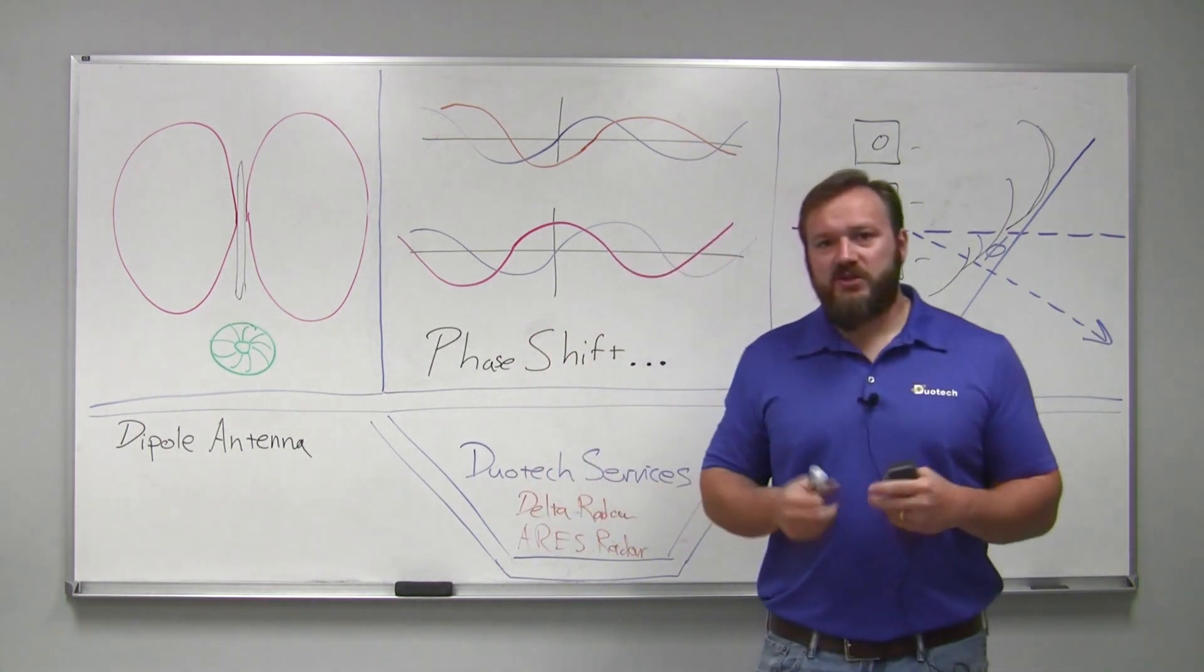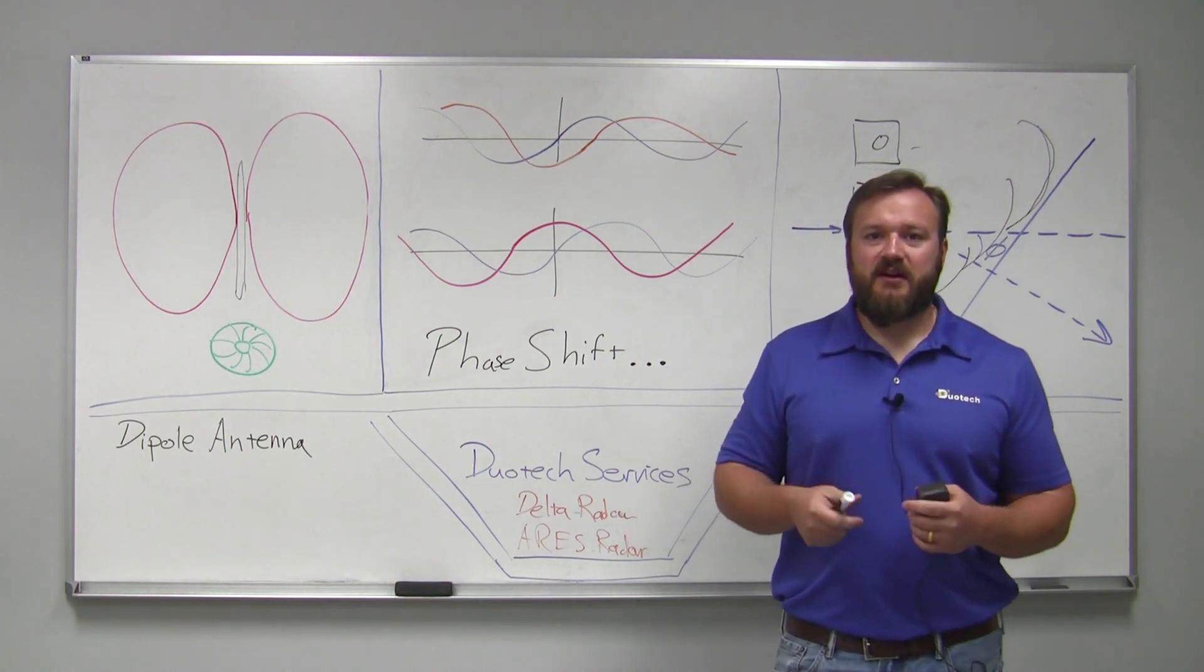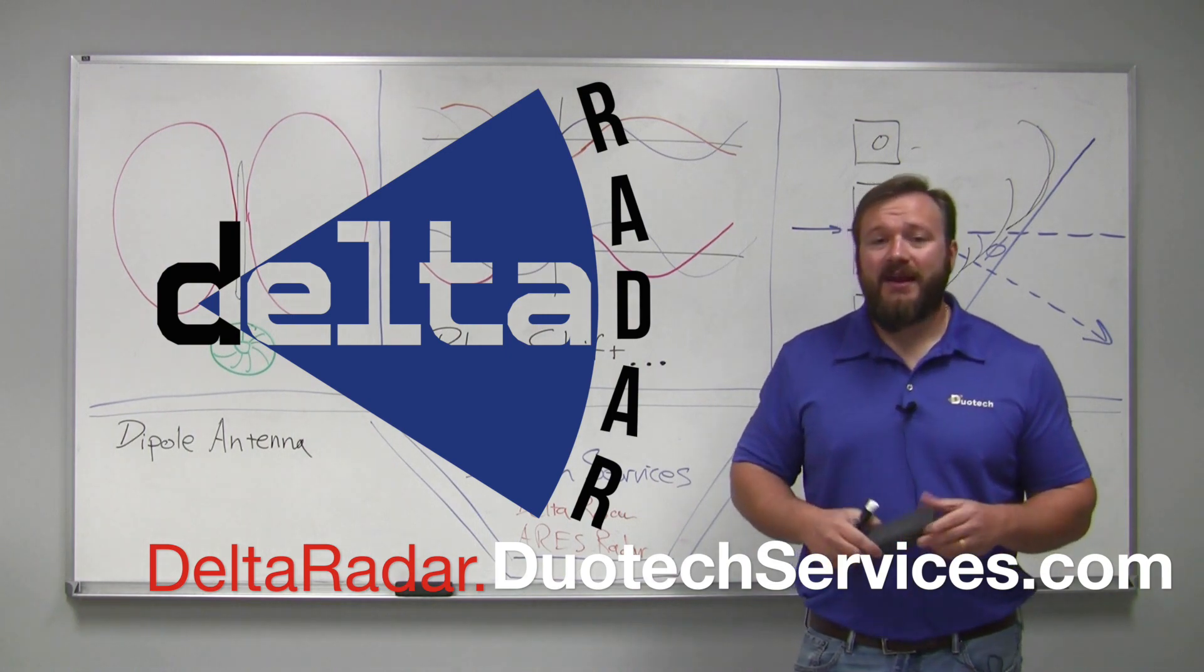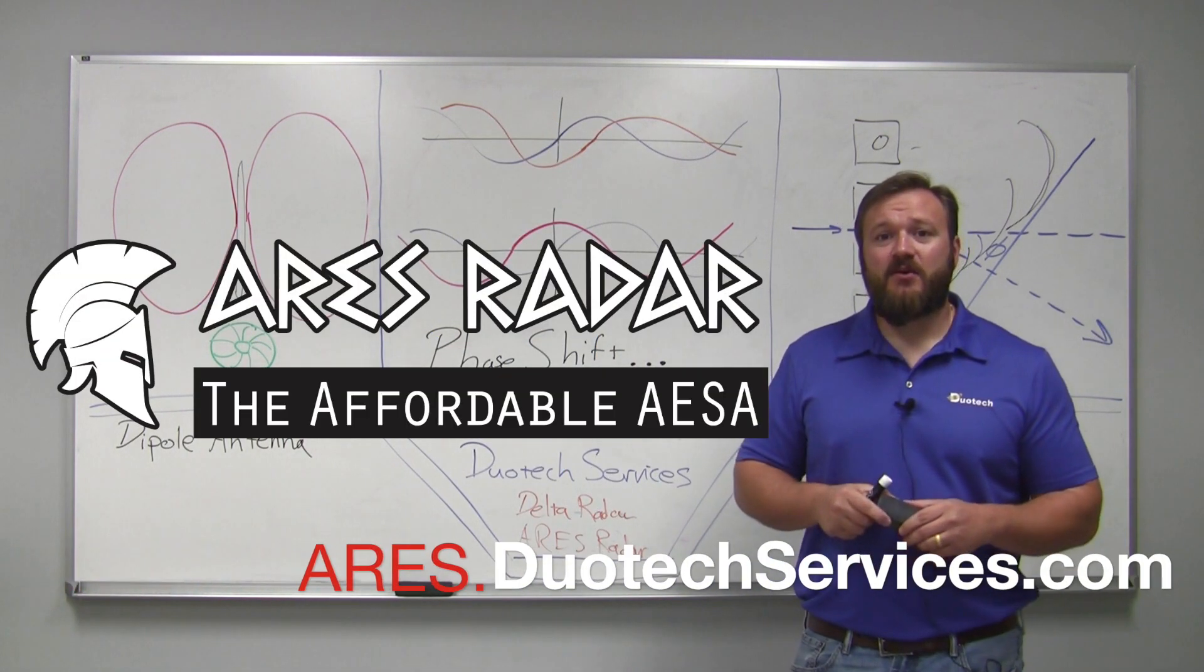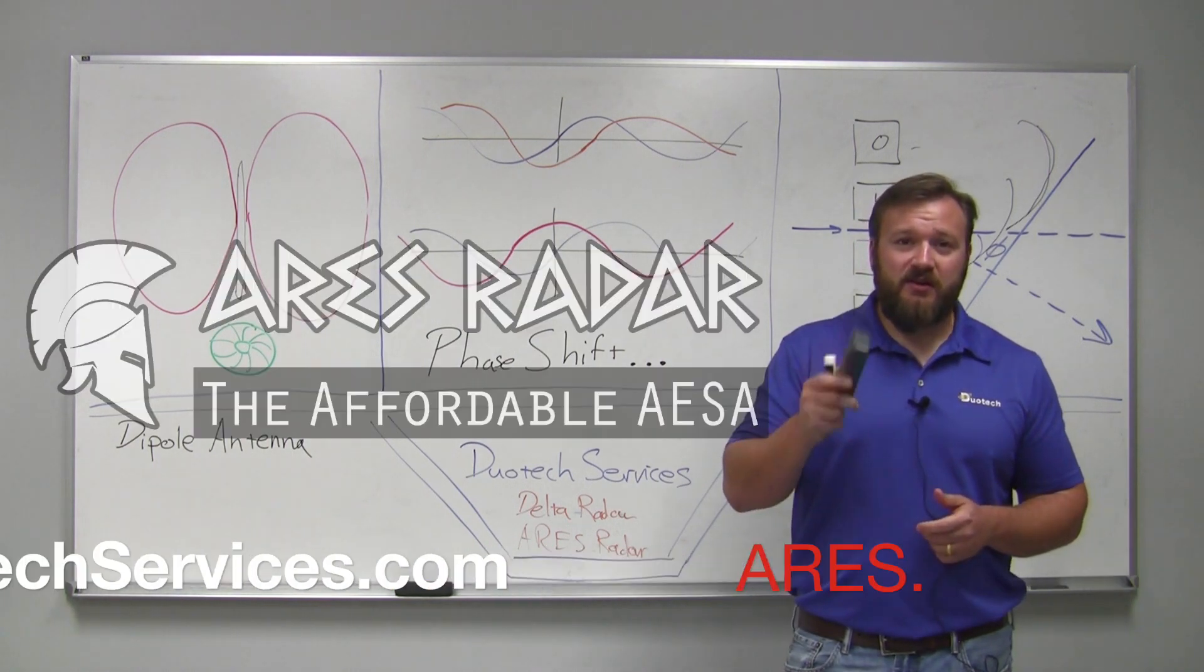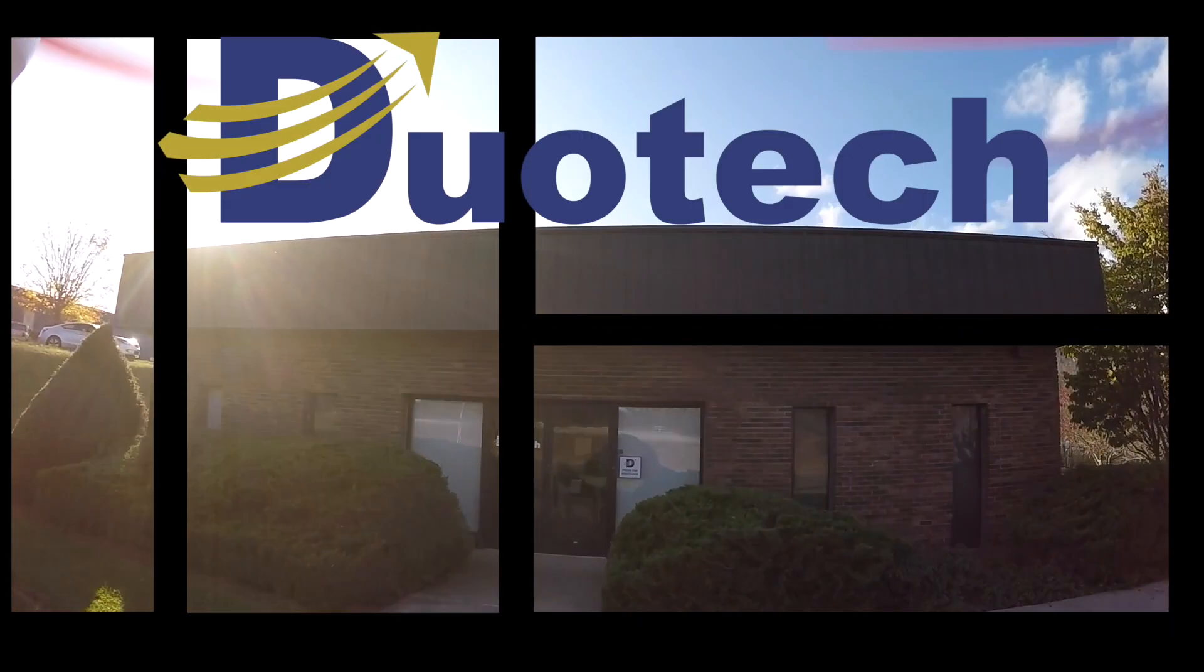If you have an opportunity, check us out online at duotechservices.com. We have our mechanically scanned airborne radar system called the Delta Radar, and our active electronically scanned array radar called the Ares. Thank you for visiting us. Check us out online at Twitter, Facebook, and duotechservices.com.